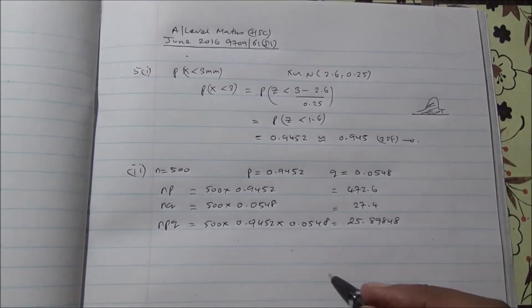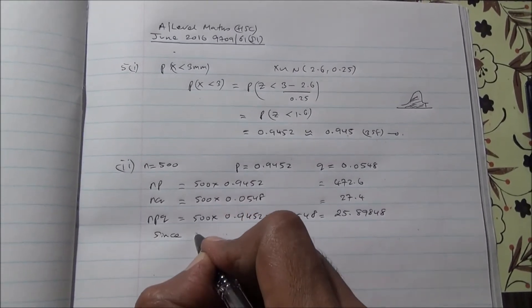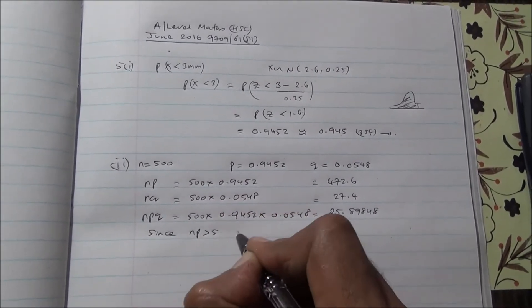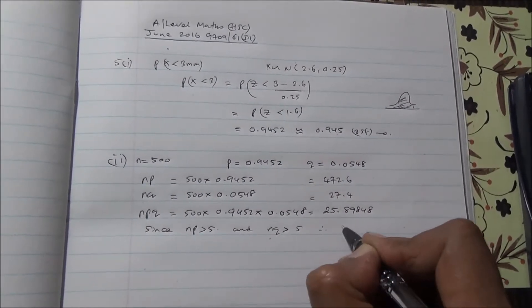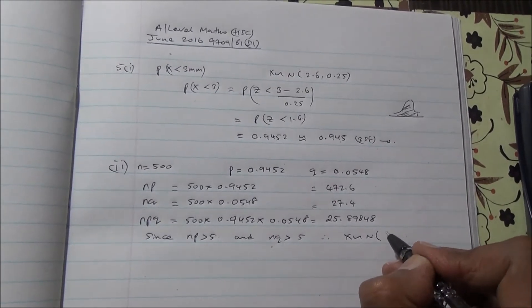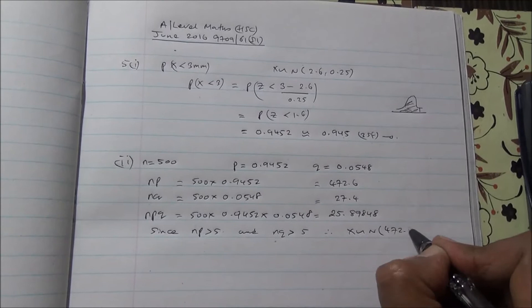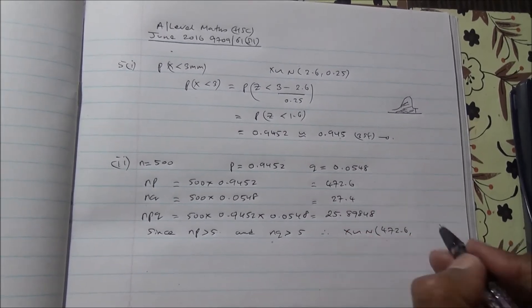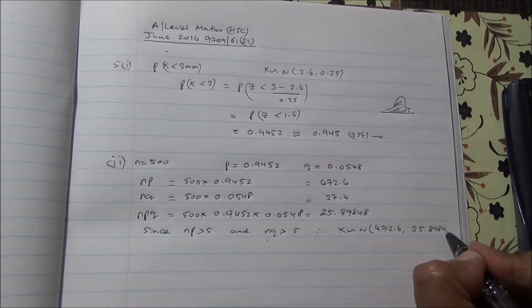Remember, you're going to make your statement: since NP is greater than 5 and NQ is greater than 5, therefore X is approximately distributed as a normal distribution with mean NP = 472.6 and variance 25.89848.